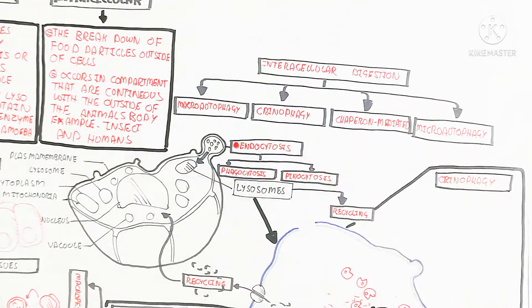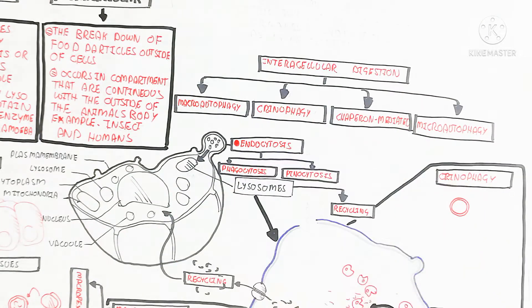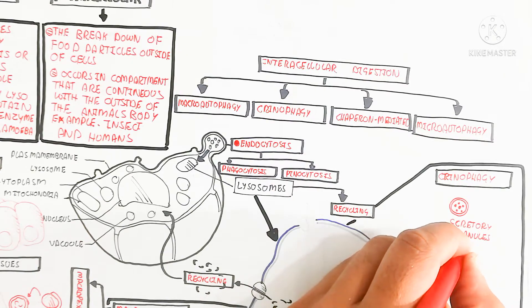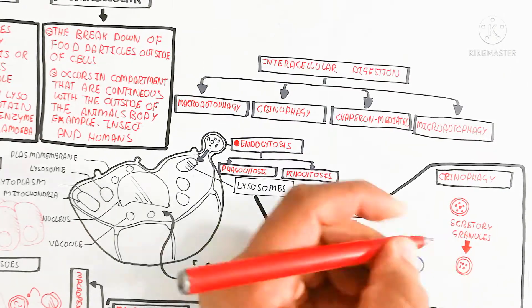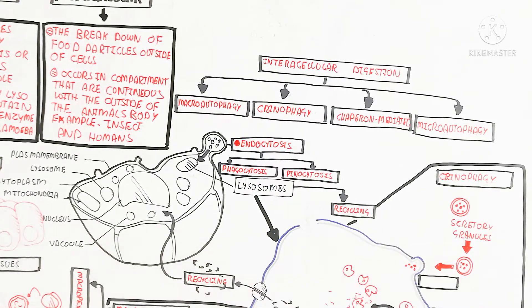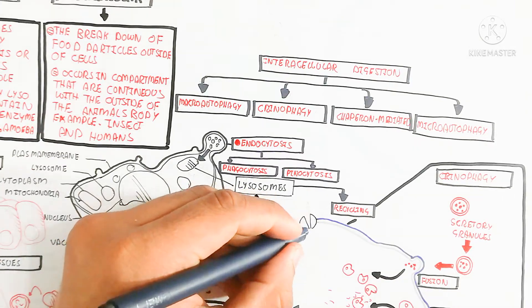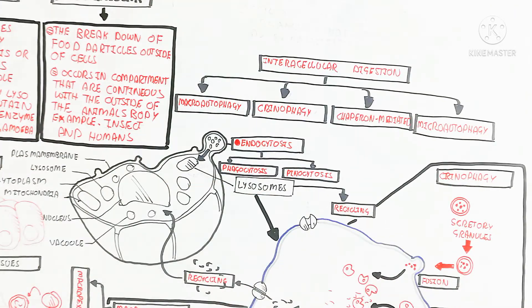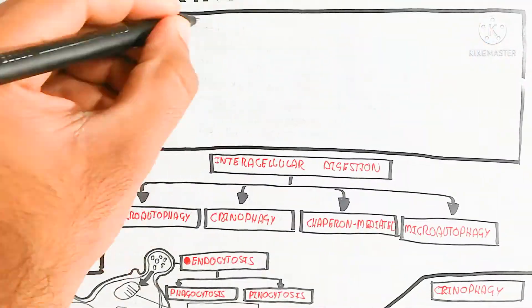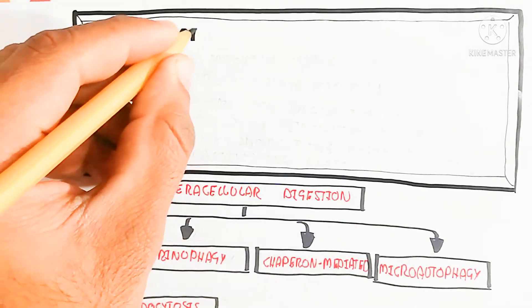Crinophagy involves secretory granules secreted from the Golgi bodies and rough endoplasmic reticulum. After secretion, they move inside and fuse with the lysosome. Hydrolytic enzymes are used for simple protein production — for example, amino acids can be derived from this mechanism. This is particularly important during the fasting state, when autophagy refines the cell interior and recycles damaged mitochondria.